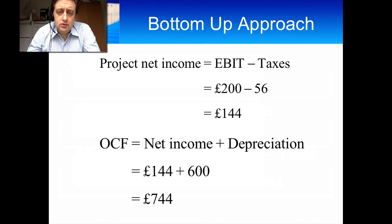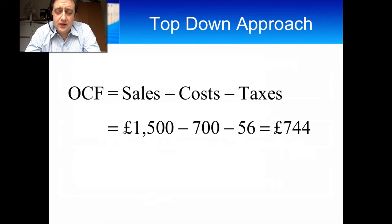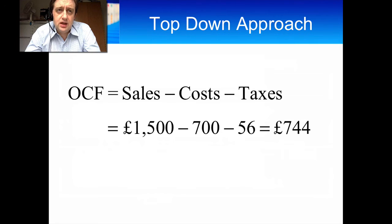The next method is the opposite — the top down approach. With the top down approach you basically forget about any accounting changes or accounting manipulations, and you only deal with actual cash flows. So sales are cash, costs are cash, and taxes are cash. Sales minus costs minus taxes gives you 744 again. That is the top down approach.